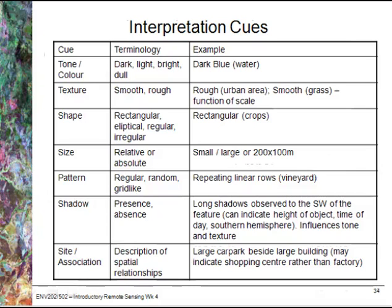One of the harder things people find difficult to understand is site and association. This is really about understanding the spatial relationship between different features — for example, you might be able to figure out that a certain patch of vegetation is actually mangroves because of its location relative to salt water bodies.